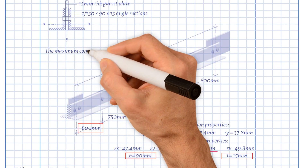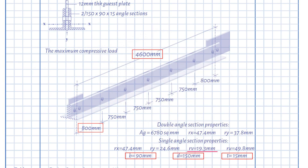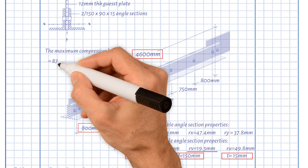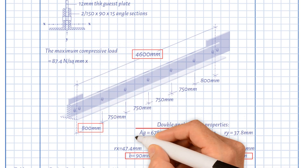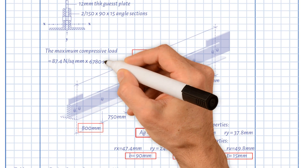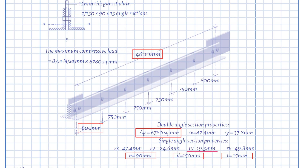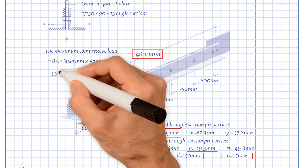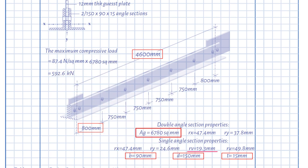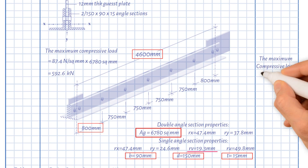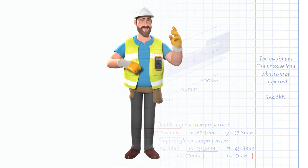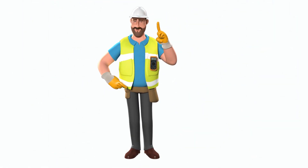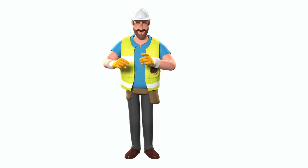As a result, the compression resistance is obtained from the compressive strength of 87.4 N/mm² multiplied by the gross cross-sectional area of 6,780 mm². This gives a value of 592.6 kN. Therefore, the maximum compressive load which can be supported equals 592.6 kN.